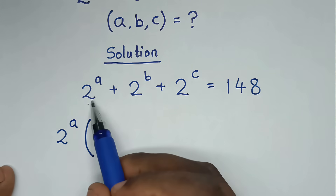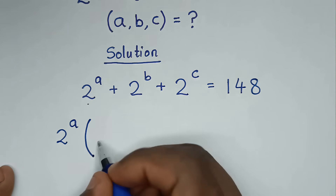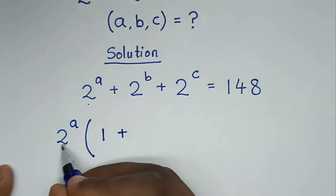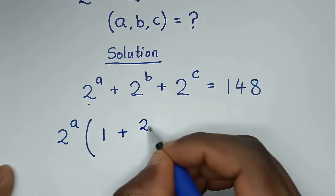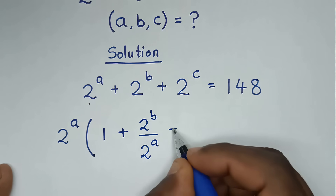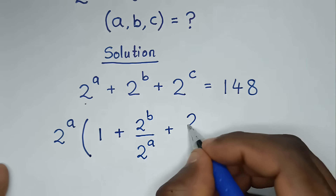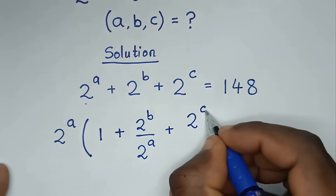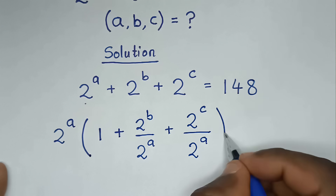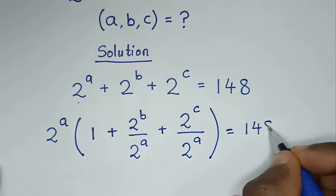So, when we divide: 2 power of A divided by 2 power of A is 1, then plus 2 power of B divided by 2 power of A, plus 2 power of C divided by 2 power of A, bracket — is equal to 148.